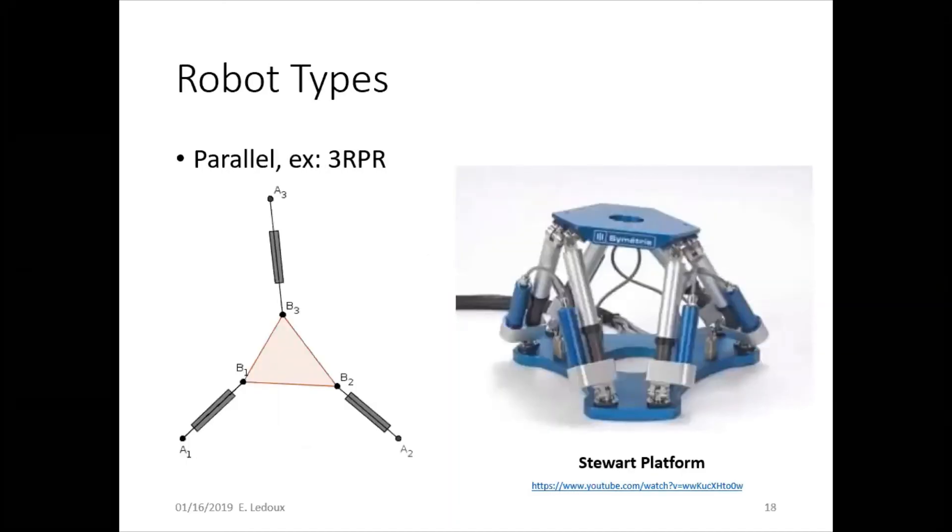A 3RPR robot has three legs and each one has revolute, prismatic, revolute joints. You can see the two-dimensional one shown here and then the Stewart platform, which is the three-dimensional version. You can click the link to see the video. This is used in helicopter positioning systems and things like that.